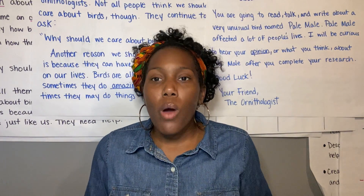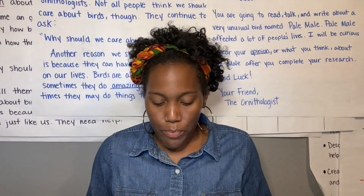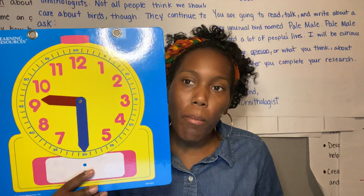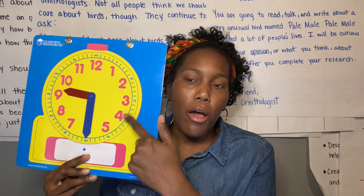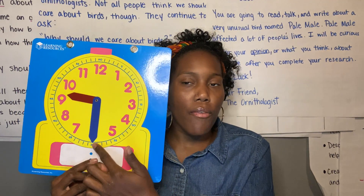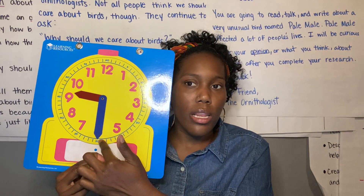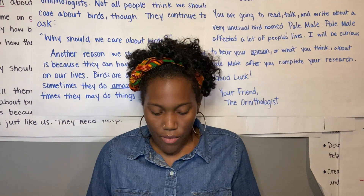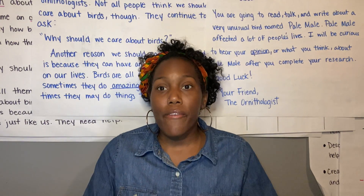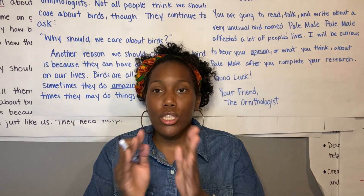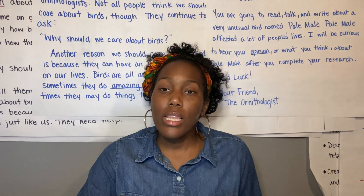Why do we put our minute hand on the 6? Why not the 10 or the 8? Because when we count by 5s and we get to that 6, we're at 30. Each number on the clock we count by 5s: 5, 10, 15, 20, 25, 30 — halfway through our clock. If I stopped on the 10, that would be 50. If I stopped on the 8, that would be 40. But right on that 6 is where it's 30, and that's half of my hour.